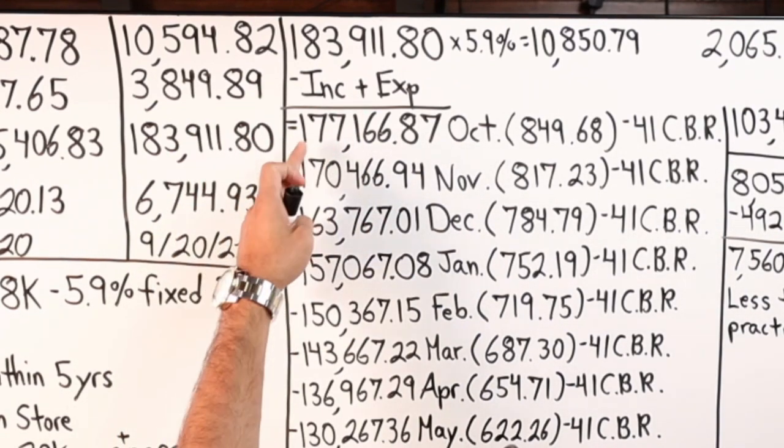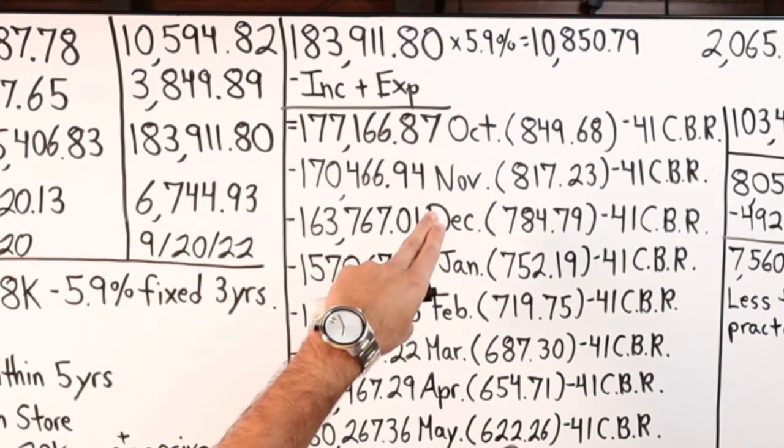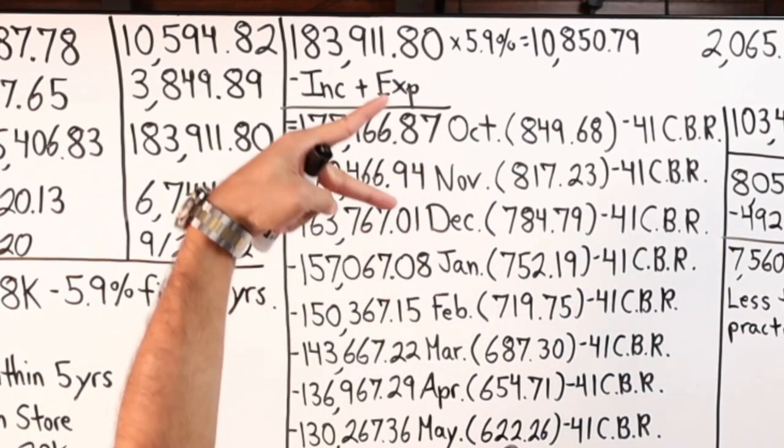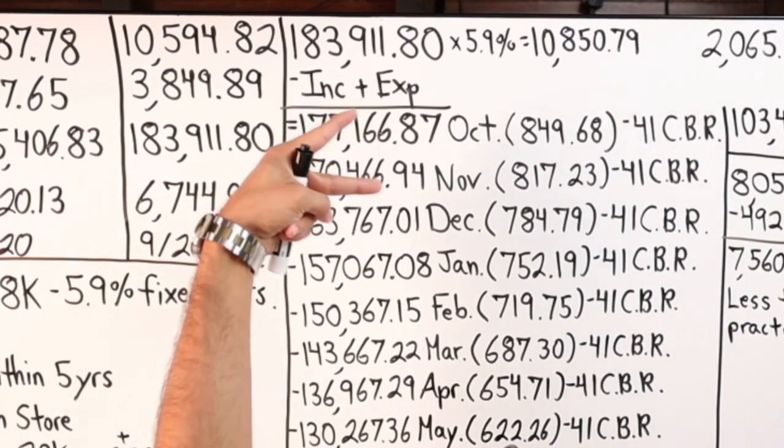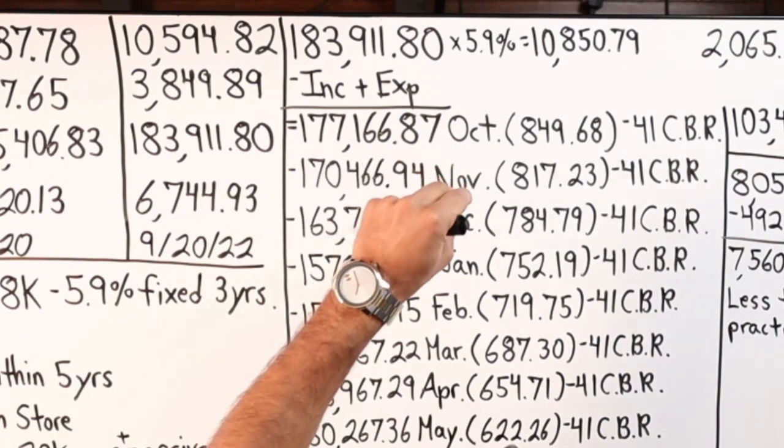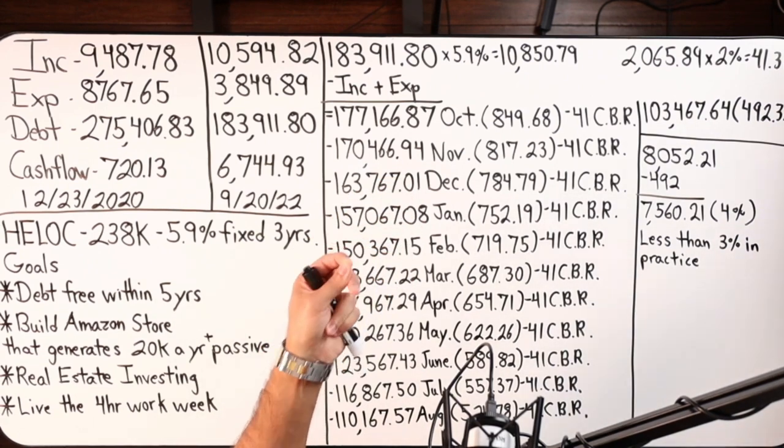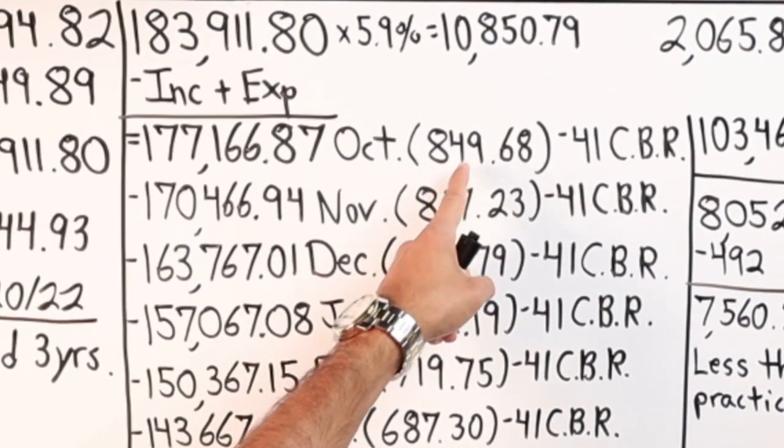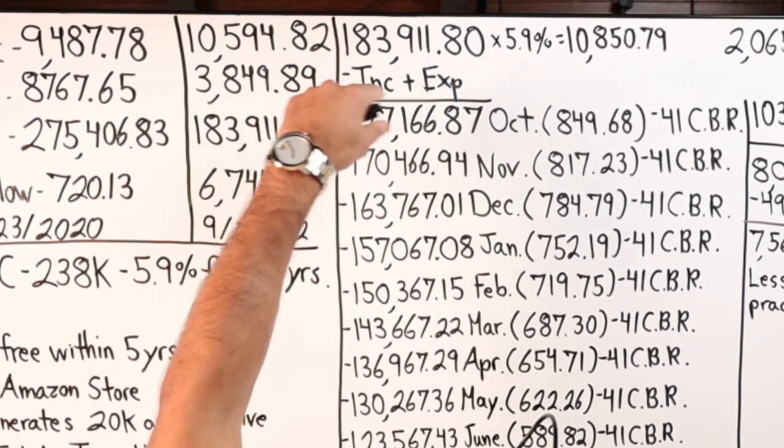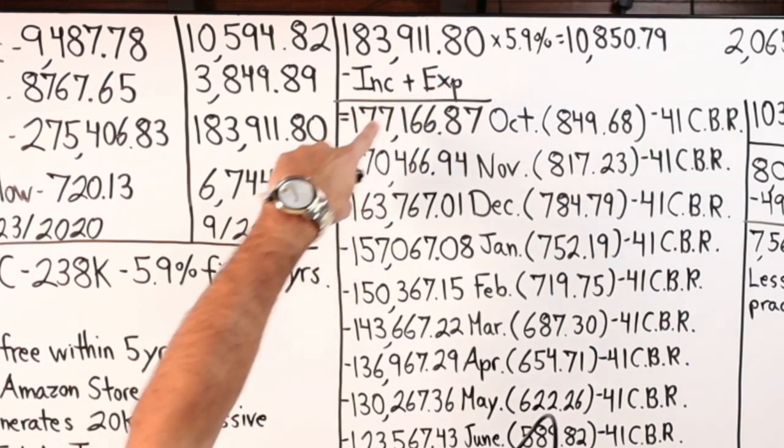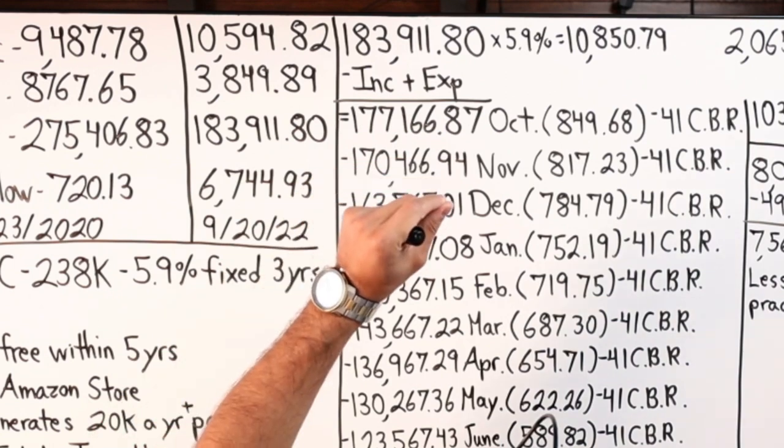Then I add expenses $3,849.89, you're gonna get a number, that number will end here $177,166.87. Times that by 5.9%, divide by 365, you get a number. So you'll have two numbers, two daily borrowing costs, two daily rates. I then added those two numbers and divided by two, then times that number by 30 days. That is an estimated borrowing costs in one month. You should end up with this number right here, $849.68, which is taking this balance minus income, that number times by 5.9%, then add expenses, you get this number times that by 5.9%, add the two, divide by two, times 30 days.